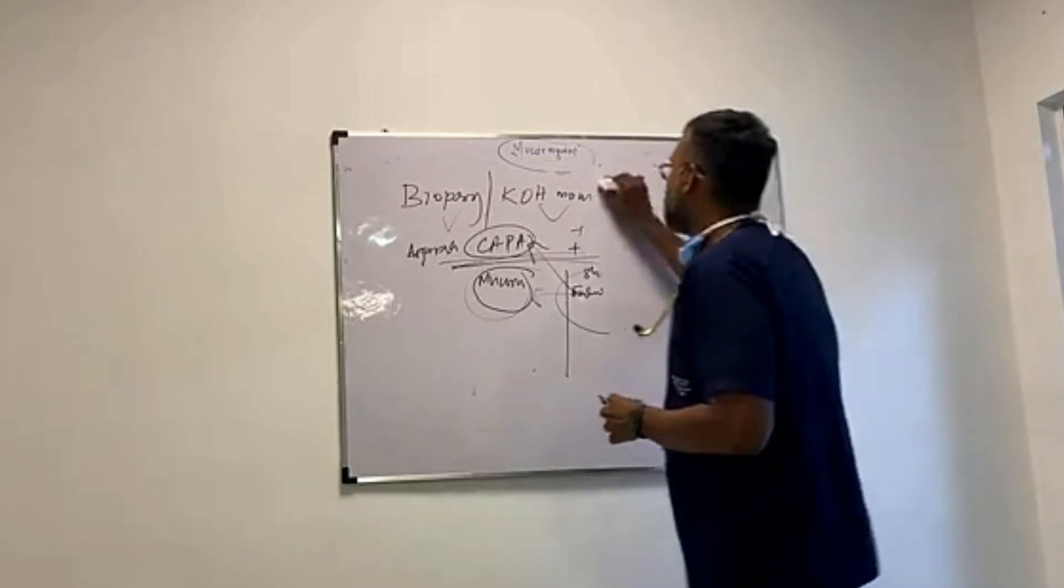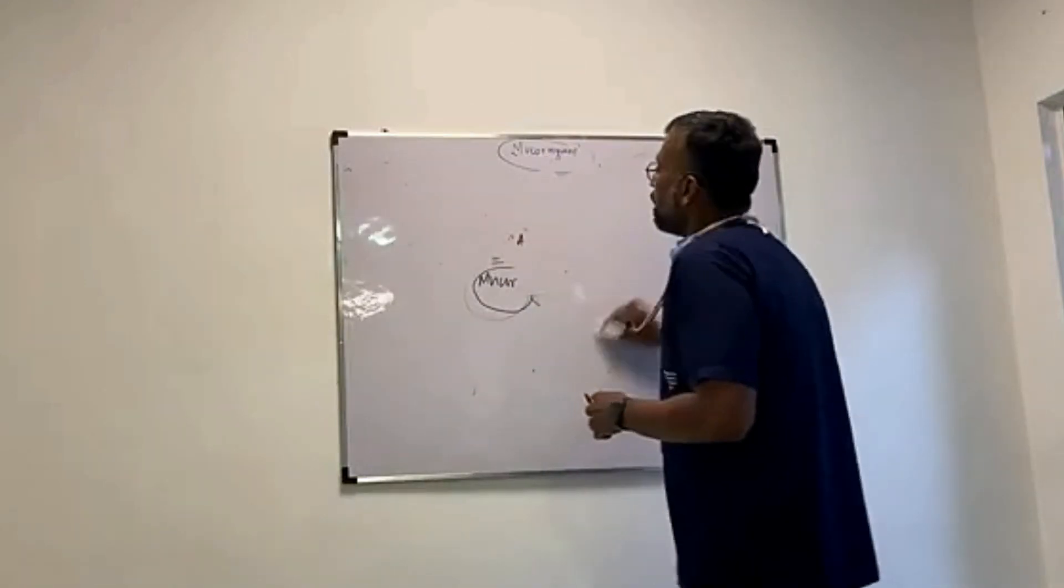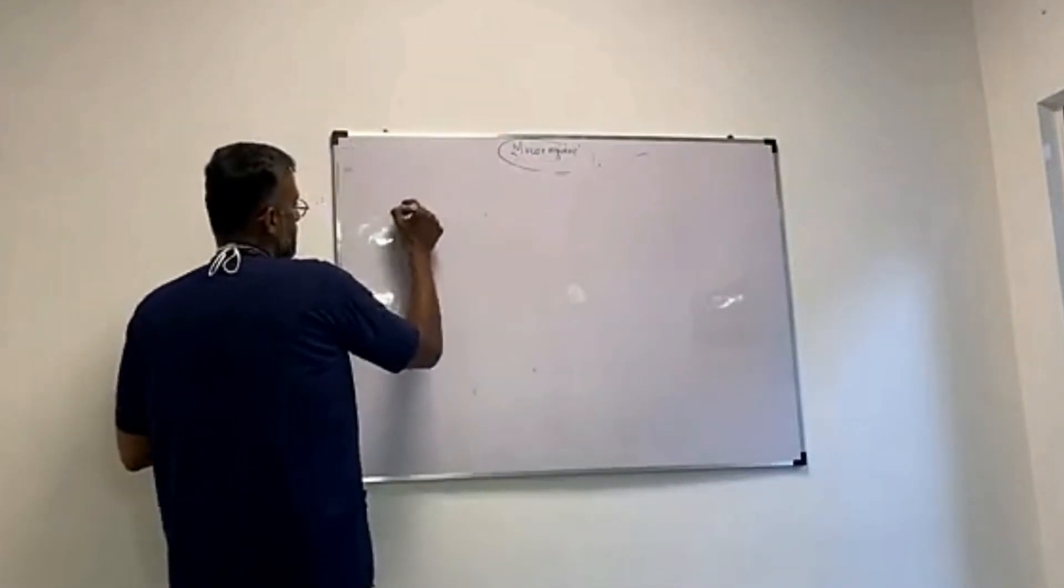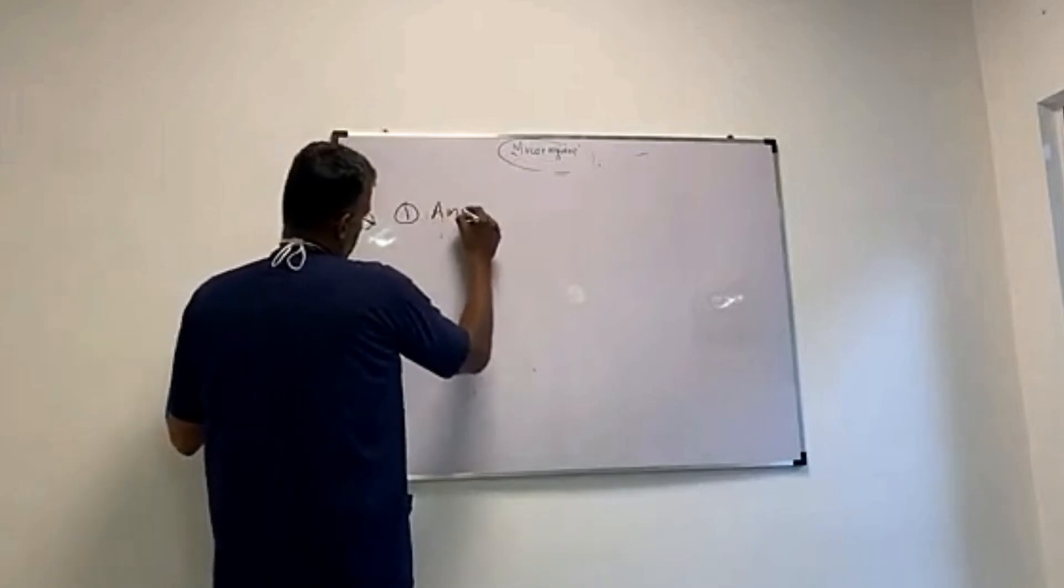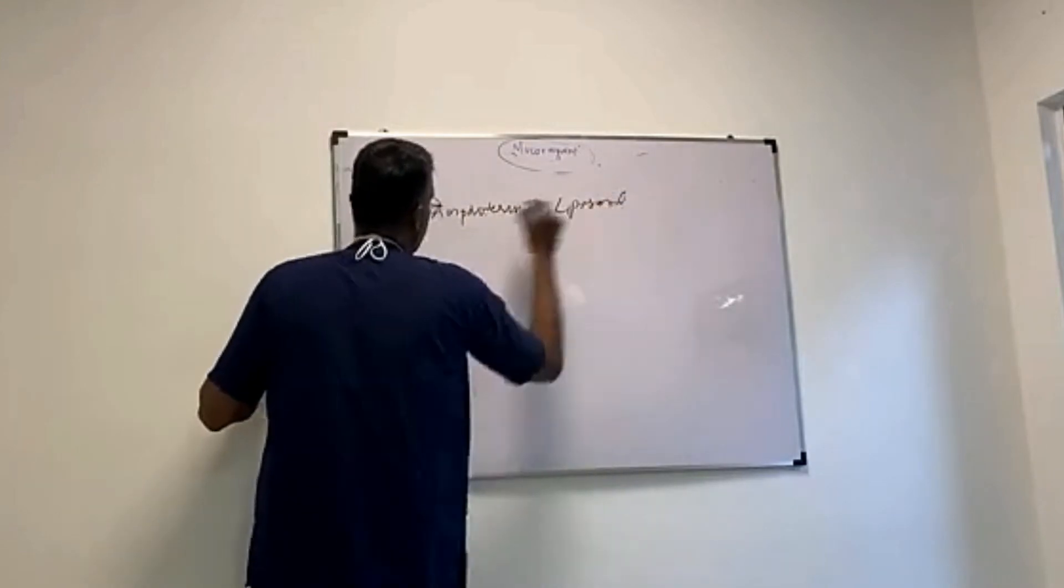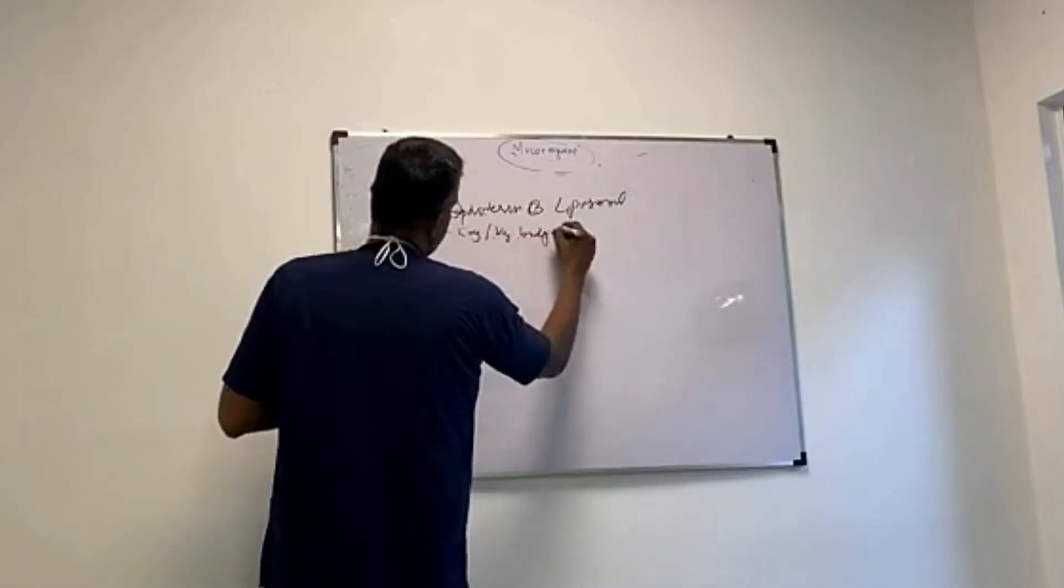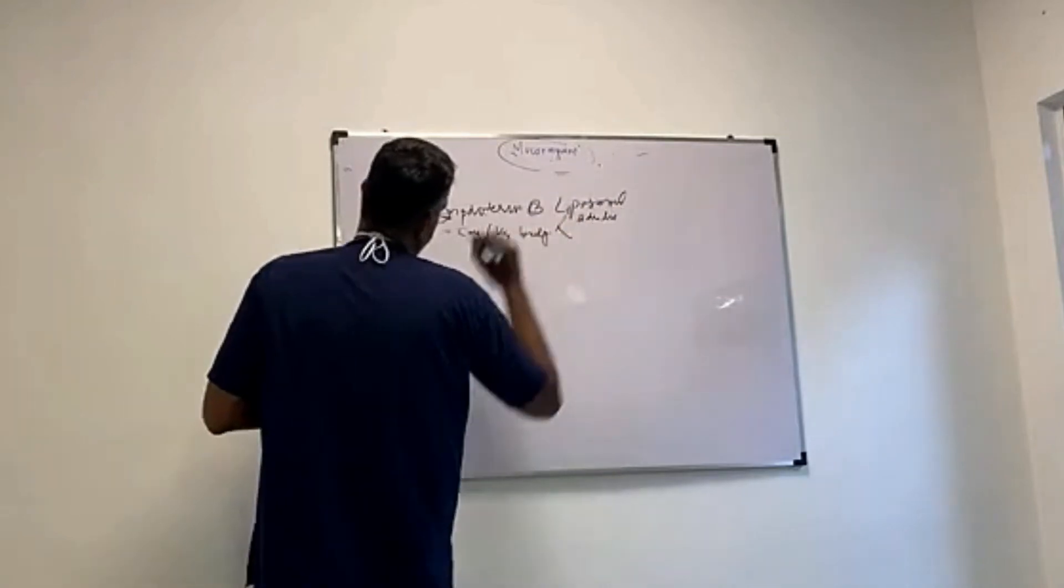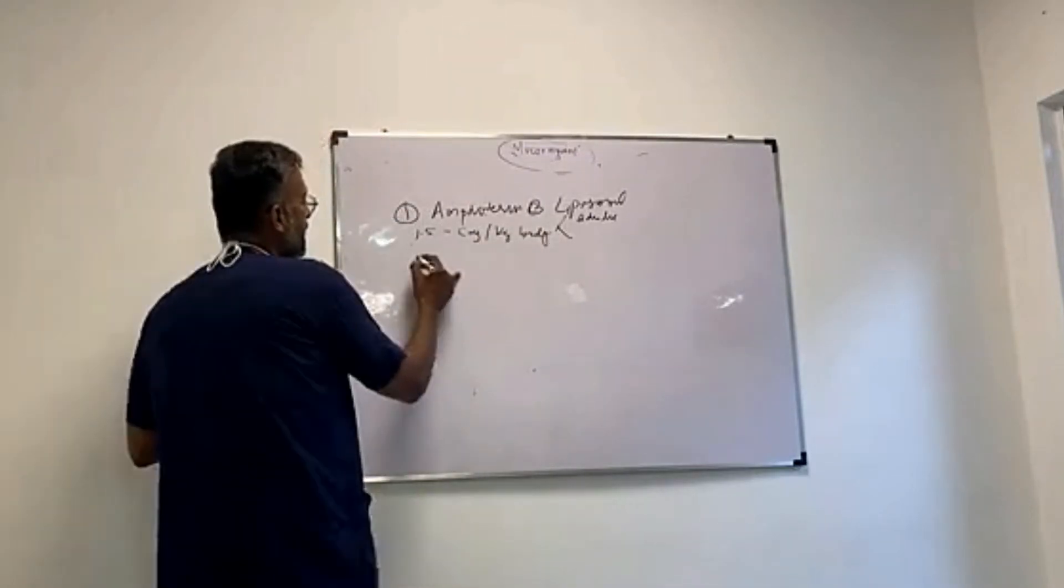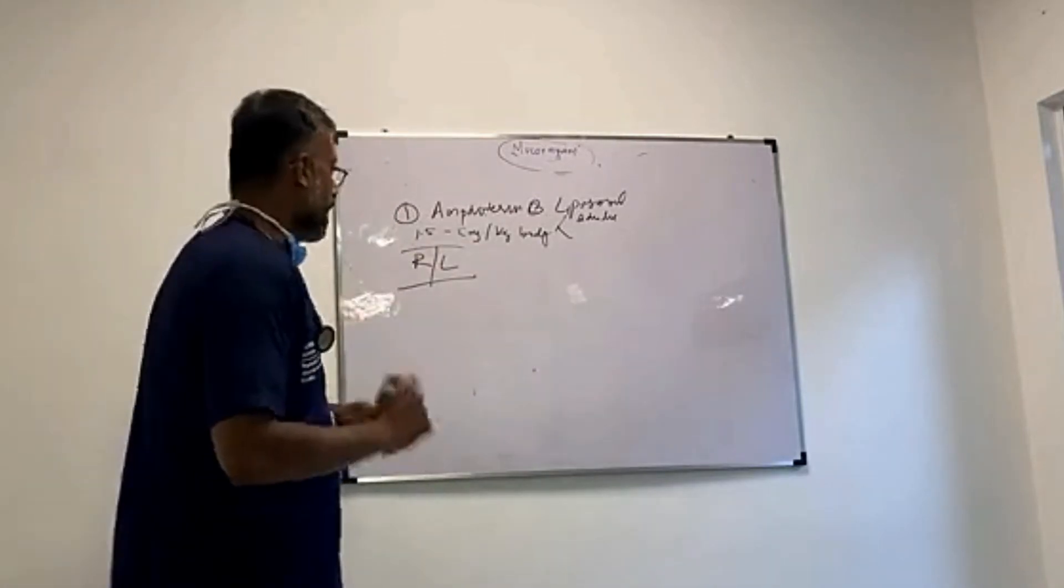Now, coming to treatment, treatment is very simple. You use Amphotericin, Amphotericin B. You have to know that you have to use liposomal. The commonest, most easily available drug is Amphotericin B liposomal. I am also going to give you the dose. The dose is 1.5 to 5 mg per kg body weight. You can give it in two divided doses. Now, with Amphotericin B, you always have to pay attention to make sure that their renal and liver functions are not worsening because Amphotericin B has a tendency to do that.